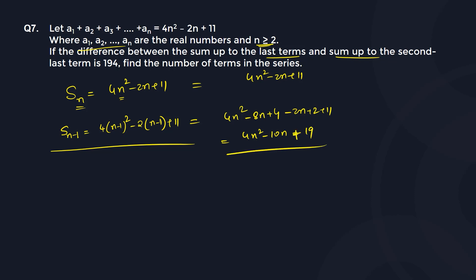Now subtracting, Sn minus Sn-1 equals 194. In terms of variables, the 4n squared terms cancel, leaving 10n minus 2n which is 8n, and the constants give 11 minus 17 which is minus 6. So we get 8n minus 6.